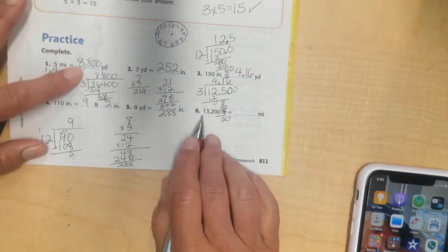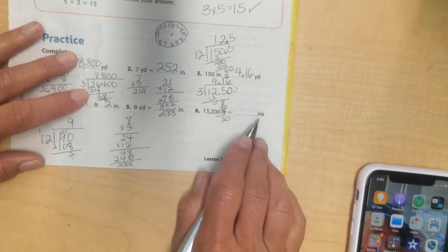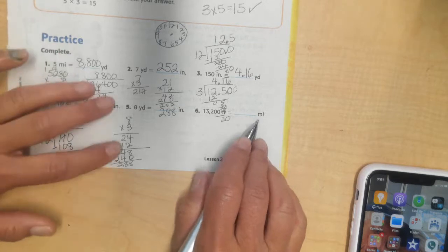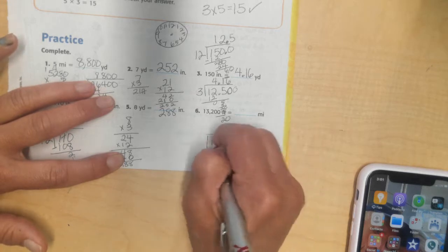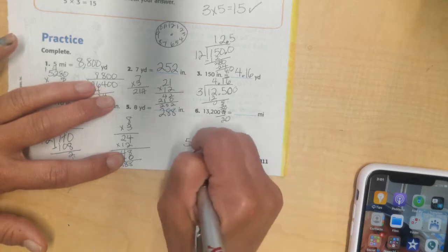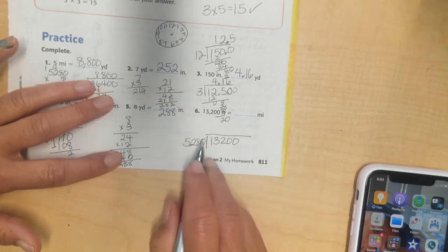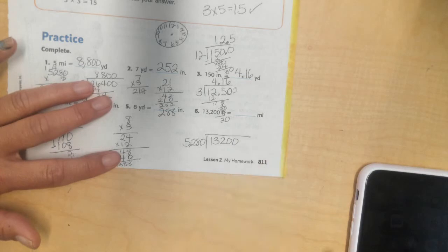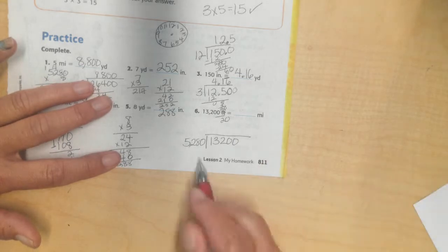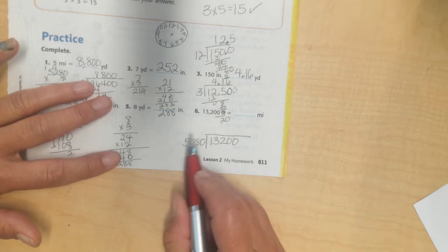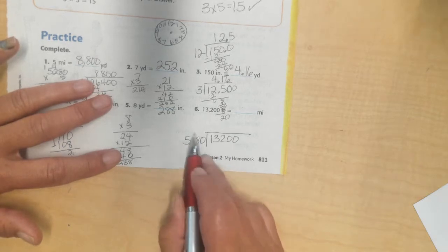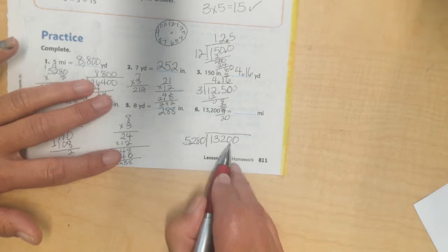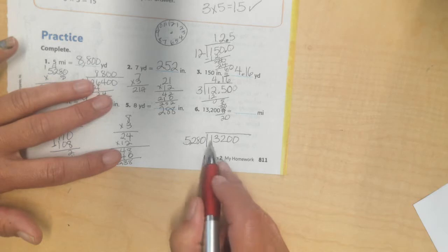Now, I have 13,200 feet. And I want to know how many miles that is. I'm going to have my 13,200 feet and I'm going to divide it up by 5,280. Because that's how many feet there are in 1 mile. I know about 5,000 into 13,000. I know 5,000 plus 5,000 will be 10,000. 5,000 plus 5,000 plus 5,000 would be 15,000. Too big. So, I'm going to say 2 times.